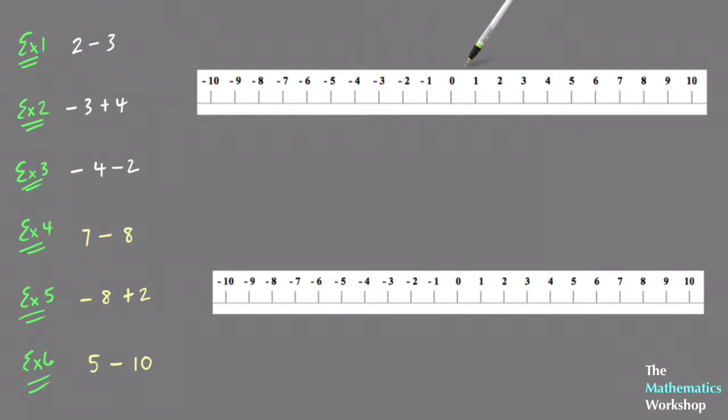Whenever you're minusing using a number line, you always move to the left no matter what number you start on. So for this one, starting on 2 and moving 3 to the left, so 1, 2, 3, and I end up on minus 1. So 2 minus 3 is equal to minus 1.